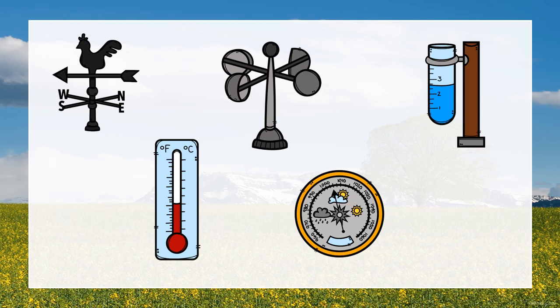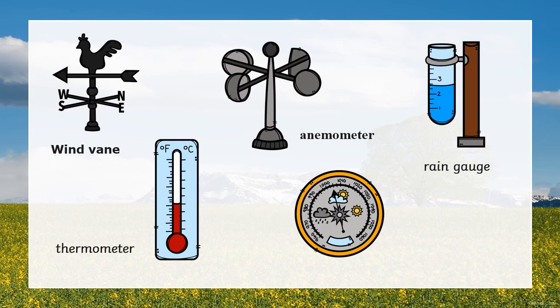Now that you have learned about weather and climate and the weather instruments, can you name these weather instruments? Pause the video and see how many you can get correct. Let's look at the first one, doing the top row first. That one is the wind vane. The second one is the anemometer. The third one is the rain gauge. The fourth one is the thermometer. And the fifth one is the barometer. Great job, boys and girls!